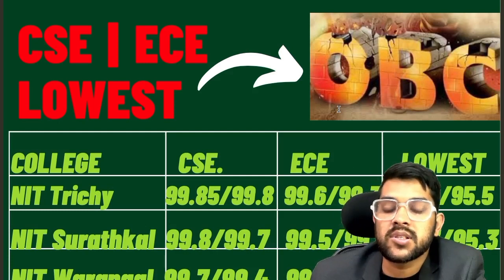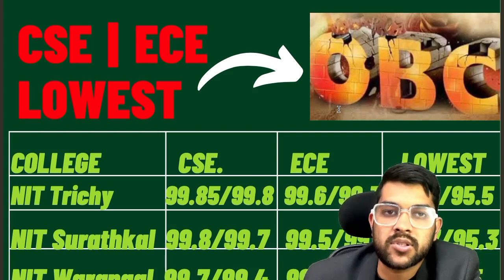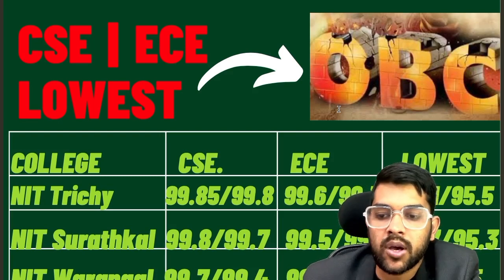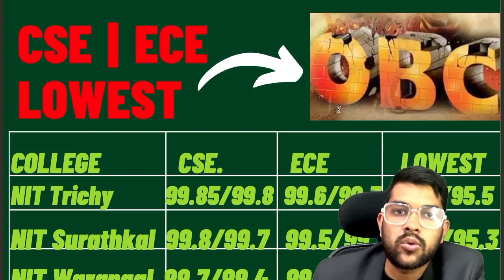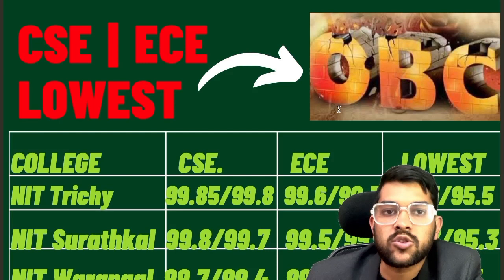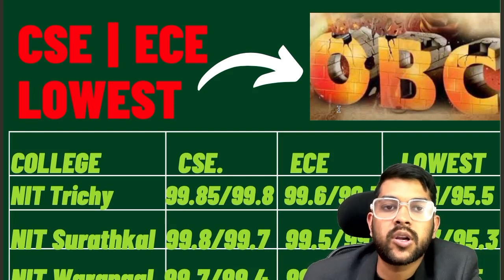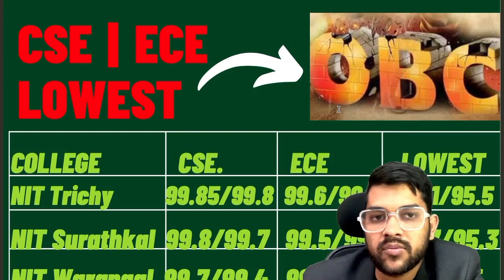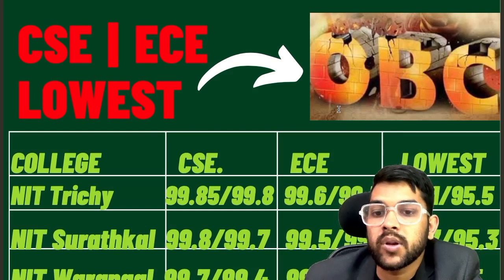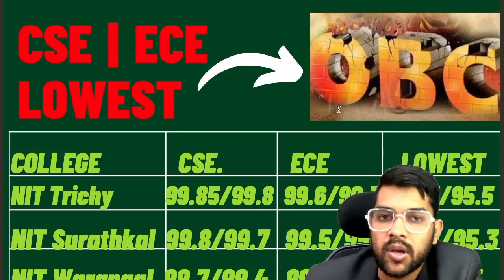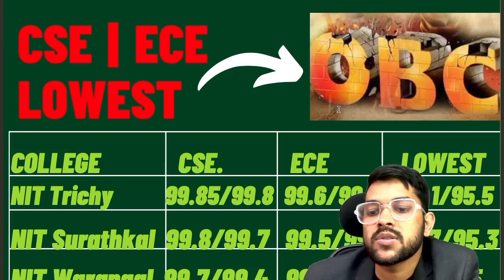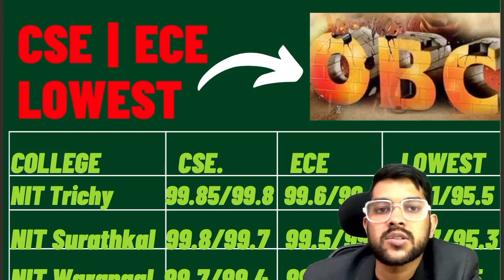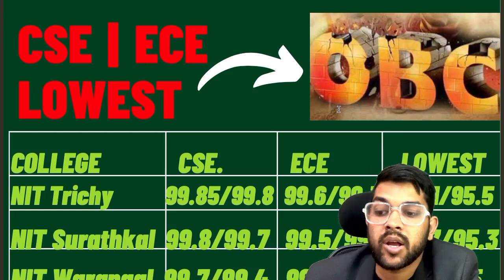All the percentiles I am showing you are valid for both attempts, because percentile never changes — marks will change. To get the same percentile in the first attempt you may need fewer marks, and in the second attempt you may need more marks, or vice versa. It also depends on the difficulty of the paper. So if you get this percentile in the first or second attempt, you are sure to get the college.